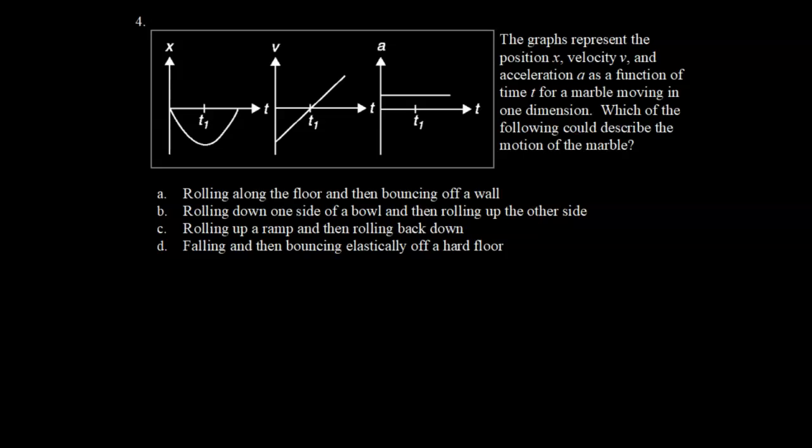Question 4. The graphs represent the position X, velocity V, and acceleration A as a function of time t for a marble moving in one dimension. Which of the following could describe the motion of the marble? So you'll notice that the acceleration right here is constant. And so we need a situation where the acceleration is constant.